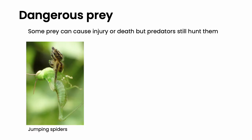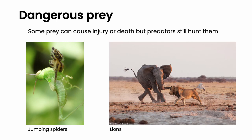Some prey can be dangerous towards predators and can cause injury or death, but predators hunt them despite this fact. An example is jumping spiders which hunt insects much larger than itself, and lions which hunt elephants.